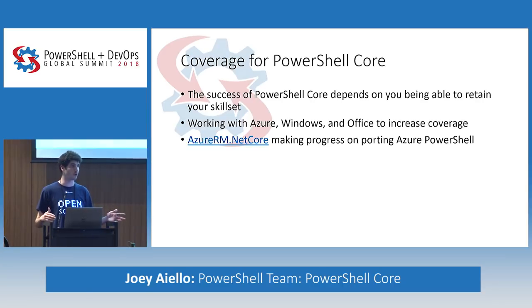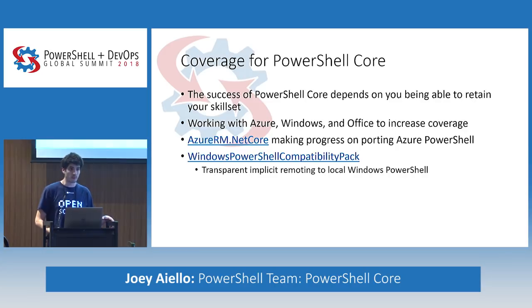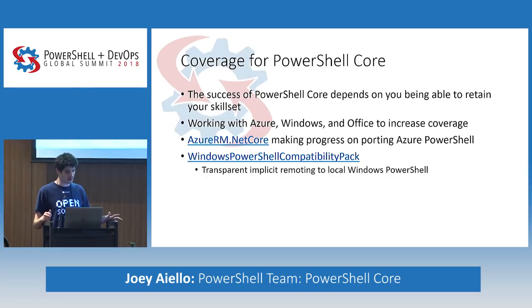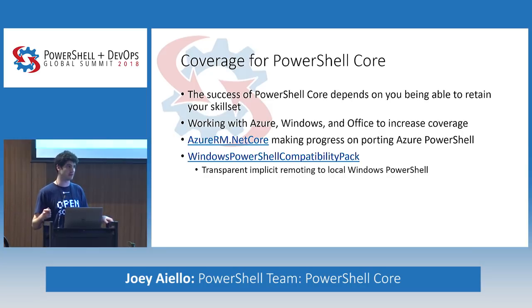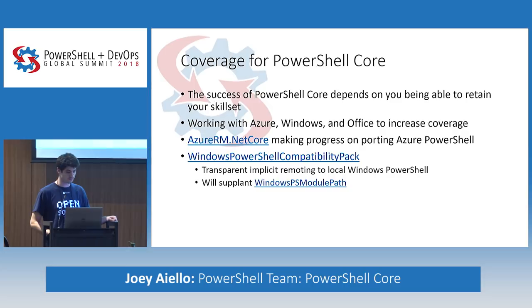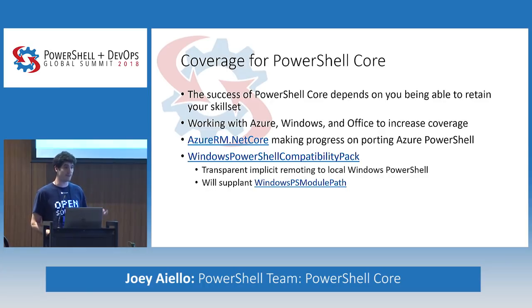We want all modules to be universal to Core and Windows PowerShell — the 'dotnetcore' suffix is a temporary measure. We also have the Windows PowerShell compatibility pack to introduce stop gaps where module compatibility isn't there yet, including transparent implicit remoting to a local Windows PowerShell instance. We also have a module called Windows PS Module Path that adds the Windows PowerShell module path to your PowerShell Core module path. Put it in your profile and 90% of things just work.